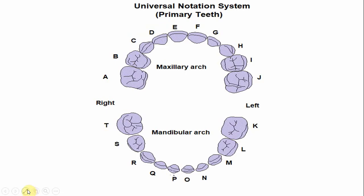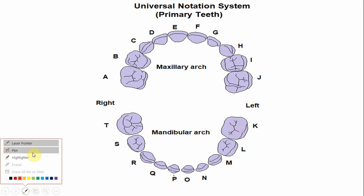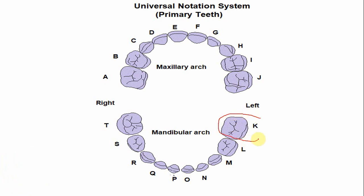In the universal tooth notation system, it begins with the right maxillary second molar with A, and the alphabets continue in a clockwise direction. So for the mandibular second molar of the left side, the alphabet is capital K. Continuing clockwise, for the right mandibular second molar, the alphabet is capital T.